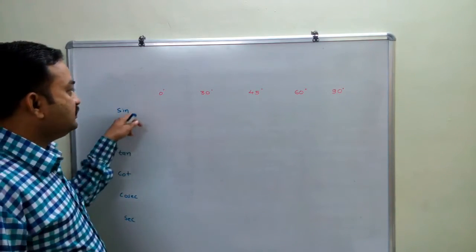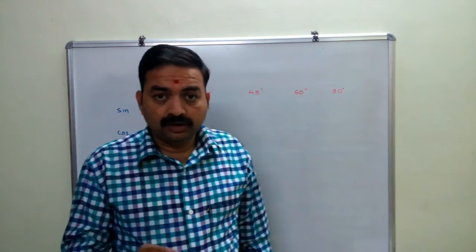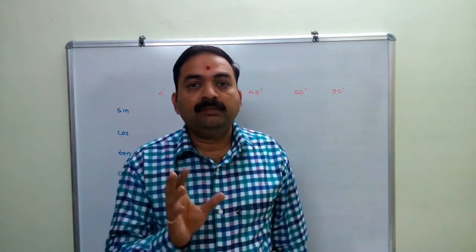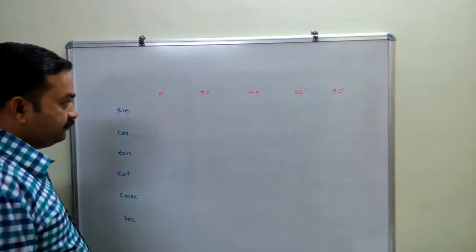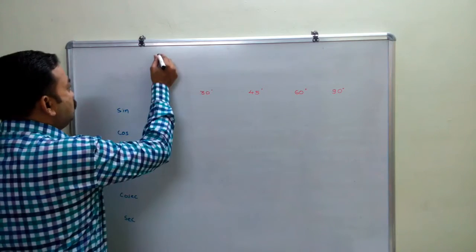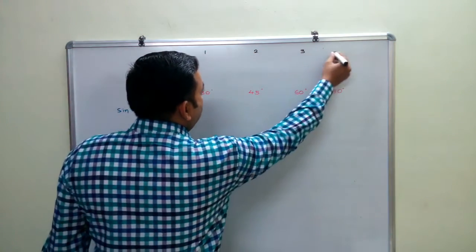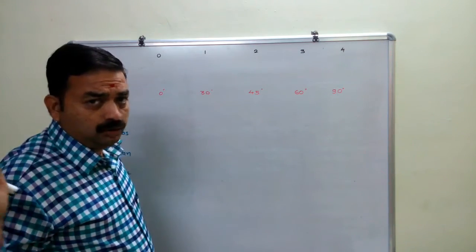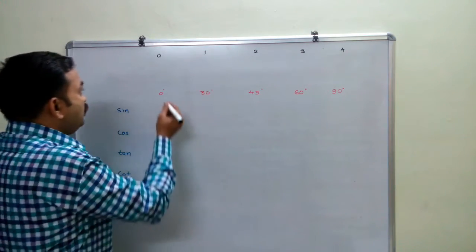What is sin 0, what is sin 30 — these methods, whatever I will explain to you, this is such a method that you can make it in minutes without any help, without help of the book. First of all, to start with this, let us write 0, 1, 2, 3, 4.